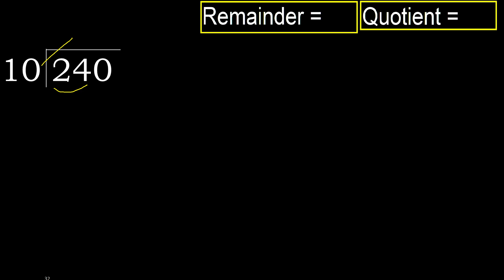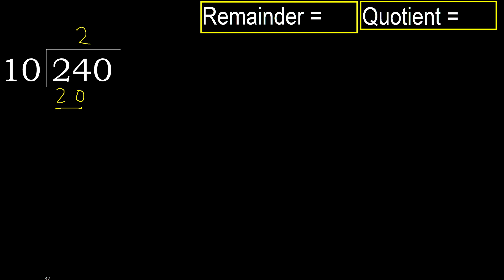10 multiplied by 2 is 20, it is not greater, okay. Subtract. 24 minus 20 is 4, next.